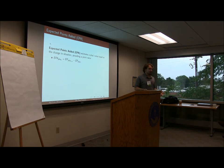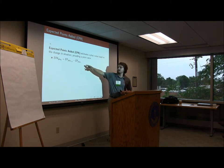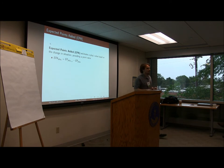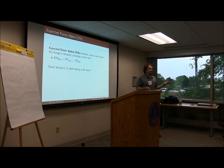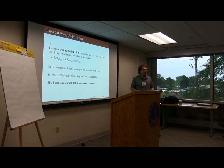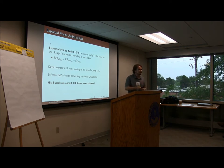We can calculate a value for the play given the starting expected points, then subtract that from the expected points at the start of the next play — that gives us the Expected Points Added for a play, the value contribution from the result of that play. Back to our example: David Johnson's 11 yards leading to a fourth down gave only 0.0096 expected points added. Meanwhile, Le'Veon Bell's four yards gave 0.9225 expected points added — his four yards are 100 times more valuable than Johnson's 11. He got the first down and continued the drive.